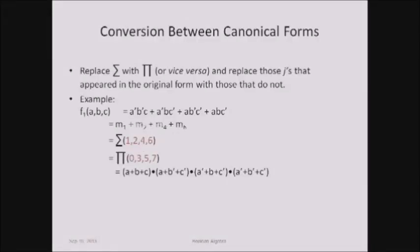Now, conversion between the canonical forms: replace summation with pi and replace those j's that appeared in the original form with those that do not. Let us see an example. f1 of a, b, c equals this expression, and the min terms for this particular expression are m1 plus m2 plus m4 plus m6. The max terms for this expression are the terms which are not the min terms.